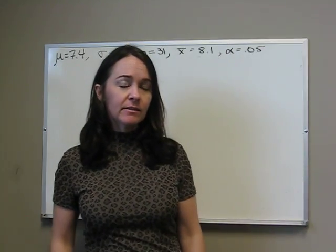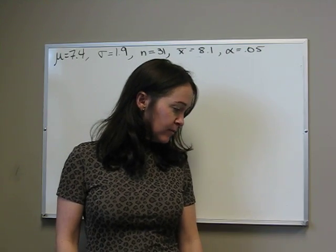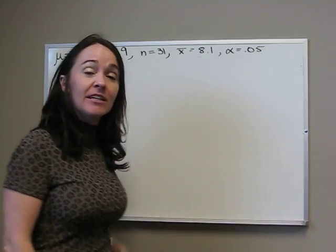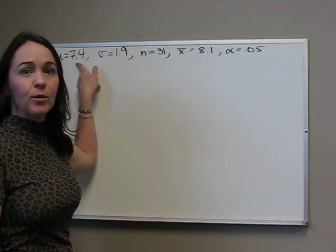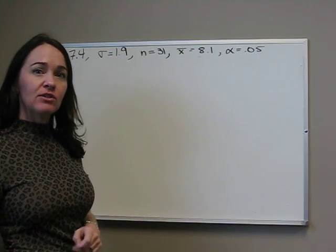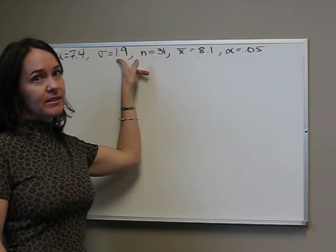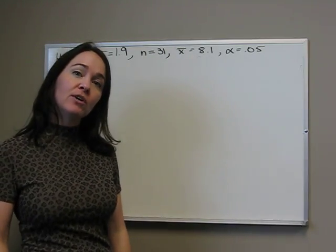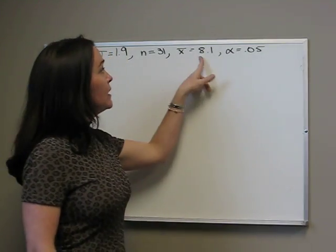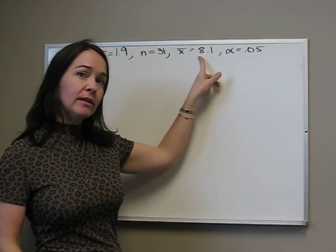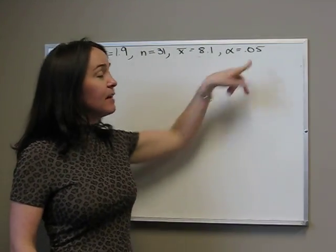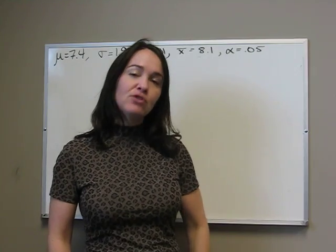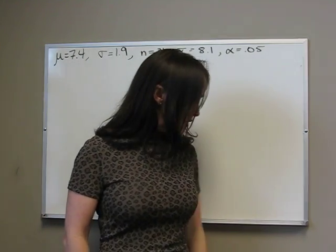Our scenario is that the pH balance of arterial plasma in adults with arthritis has an average of 7.4, so that's mu, with a population standard deviation of 1.9, so that's sigma. A random sample of 31 patients with arthritis were given a new drug, and it was found that their pH balance ended up having a mean of 8.1. We want to test at the 5% significance level whether the medicine has changed the pH balance of the arterial plasma.